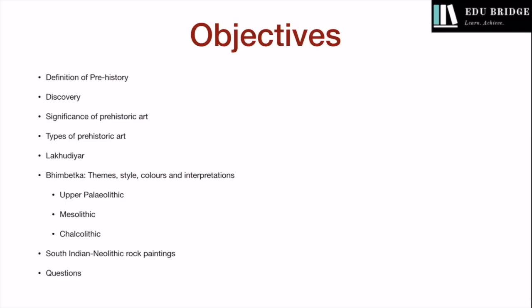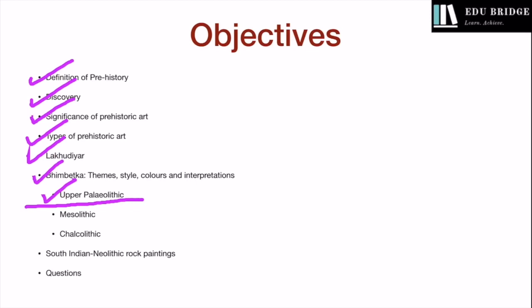For convenience, I have decided to cover this topic over two videos. In the first video, we are going to cover the definition of prehistory, the discovery of the major sites, the significance of prehistoric art, and the types of prehistoric art. We are also going to conduct a case study into the site of Lakhudiyar. For Bhimbetka, we are going to cover the themes, styles, colors, and interpretations of the Upper Paleolithic period. The Mesolithic and Chalcolithic periods at Bhimbetka, along with South Indian Neolithic rock paintings and questions on prehistoric art, are going to be covered in the second video.